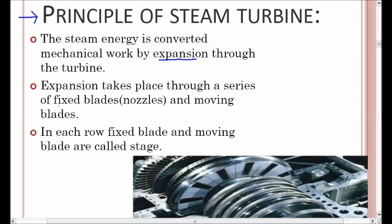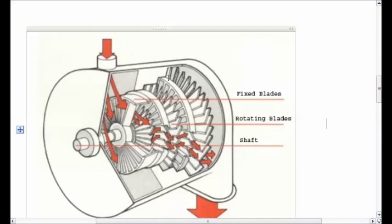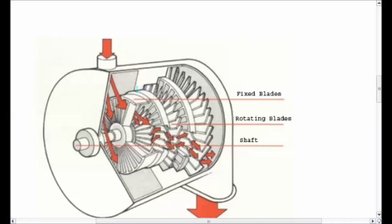In a steam turbine there are two major components for converting energy into rotary motion: the fixed blade and the moving blade. Fixed blades are also called nozzles. In each row, a fixed blade and moving blade together are called a stage. The components that don't move are called fixed blades, also known as the stator, while the components that move are called rotating blades, also known as the rotor.